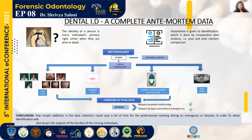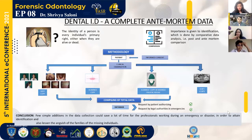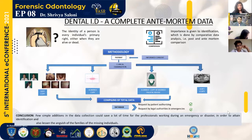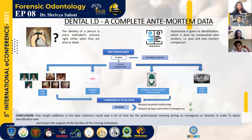The identity of a person is a right of every individual, irrespective of whether they are alive or dead. How do you identify a person? It could be through physical identification, fingerprinting, dental records, or DNA analysis. There are certain situations where physical examination or fingerprinting cannot be used, and in such cases it has been proved that dental records are quite reliable.